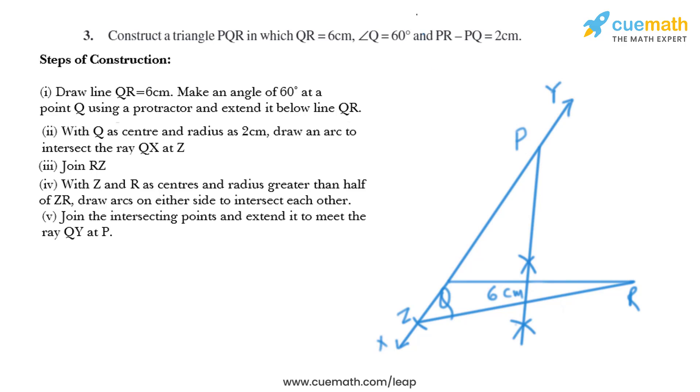Now we have to join P and R, and PQR is the required triangle. Let's join P and R, and we have got PQR as the required triangle.